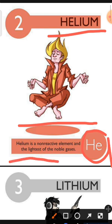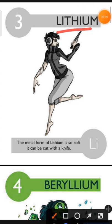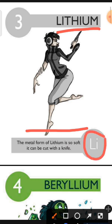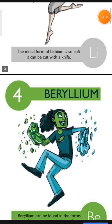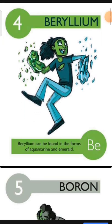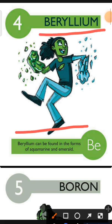Our third element is Lithium. The characteristic of Lithium is: the metal form of Lithium is so soft it can be cut with a knife. Element number 4 is Beryllium. The characteristic of Beryllium is: Beryllium can be found in the forms of Aquamarine and Emerald.